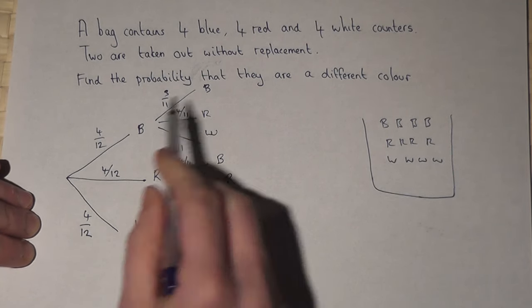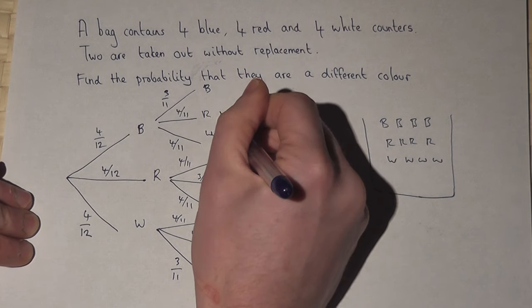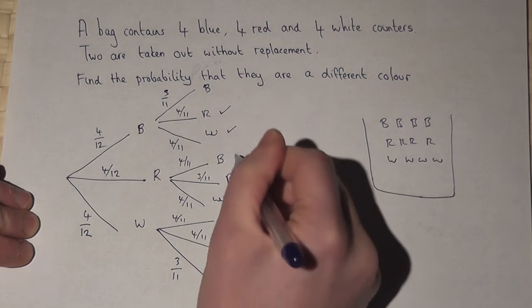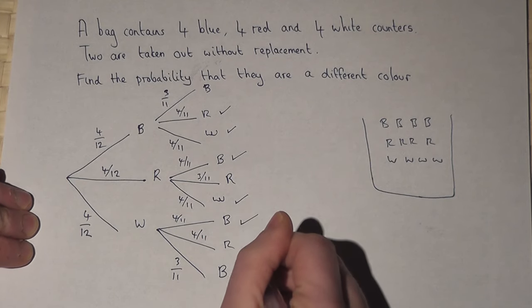And the question asks what's the chance they're a different colour. So the options are blue red, blue white, red blue, red white, white blue, or white red.